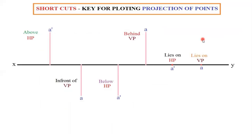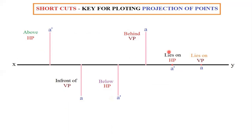This is the shortcut for plotting the projection of points. As I said before, draw the XY line and draw four lines, then write A-A, A-A, A-A alternatively. Then write HP, VP, HP, VP, HP, VP alternatively. Then write: above, in front of, below, behind, and write 'lies on', 'lies on'. If you have this shortcut, it will be very easy for you to solve any number of points they give.